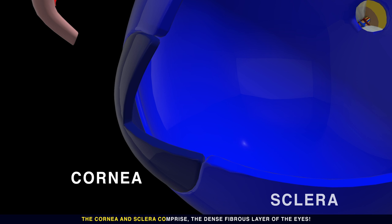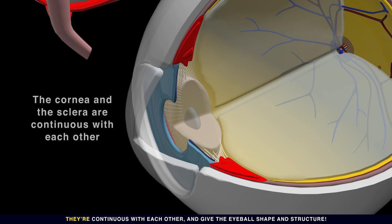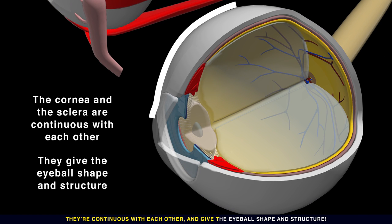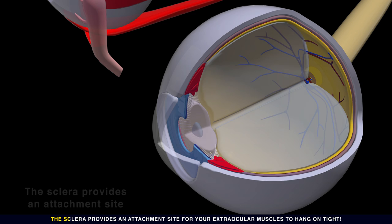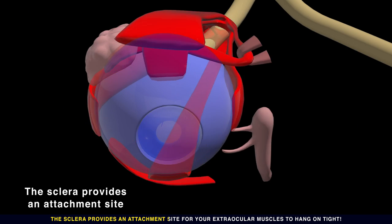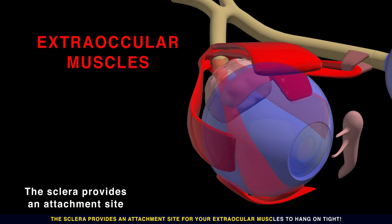The cornea and sclera comprise the dense fibrous layer of the eyes. They're continuous with each other and give the eyeball shape and structure. The sclera provides an attachment site for your extraocular muscles to hang on tight.